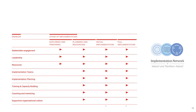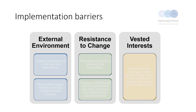Different enablers can be used at different stages in the implementation process. However, some enablers like stakeholder engagement, leadership and resources need to be attended to at every stage. Barriers are factors that reduce the probability of successful implementation. In the real world, implementation will always experience challenges and barriers. Research highlights three particular barriers: the external environment, resistance to change and vested interests.